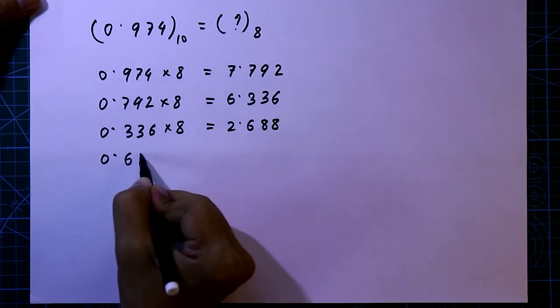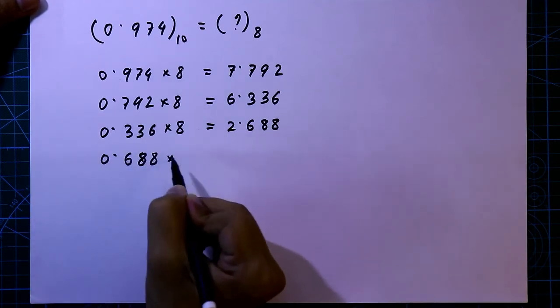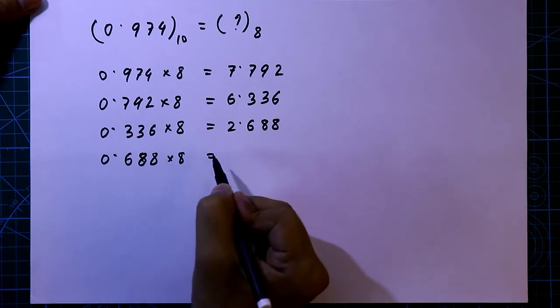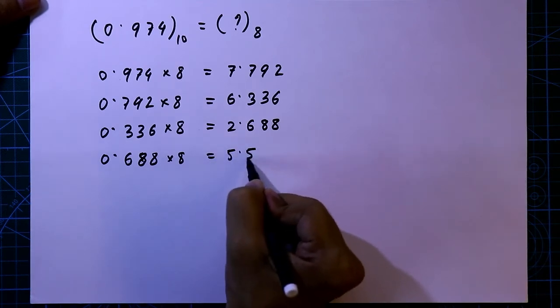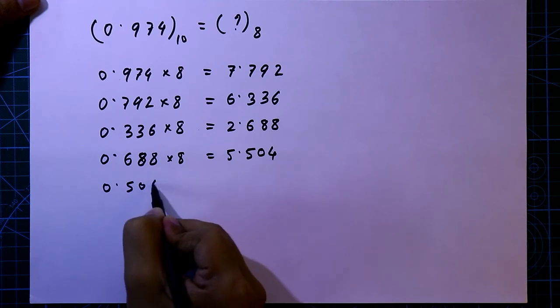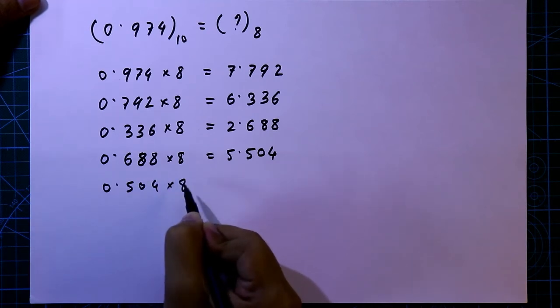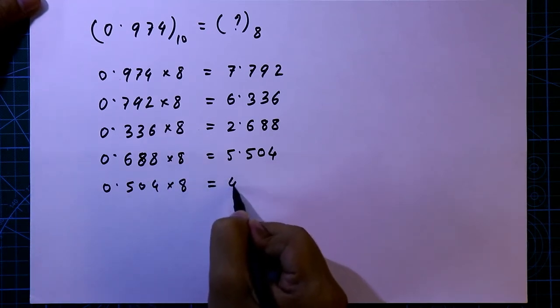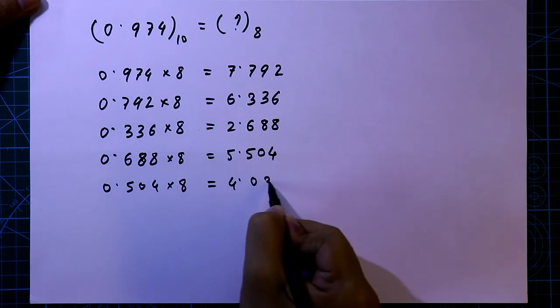0.688 again multiplied by 8, it is 5.504. 0.504 multiplied by 8, it is 4.032.